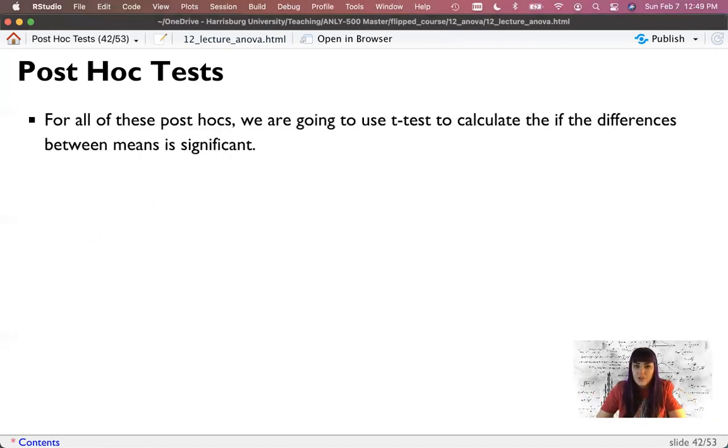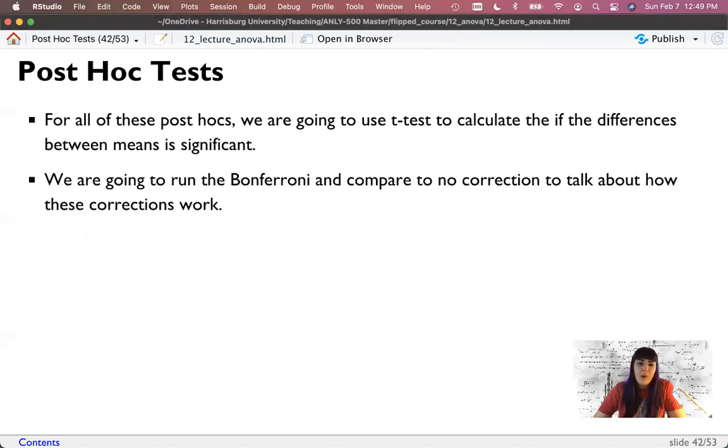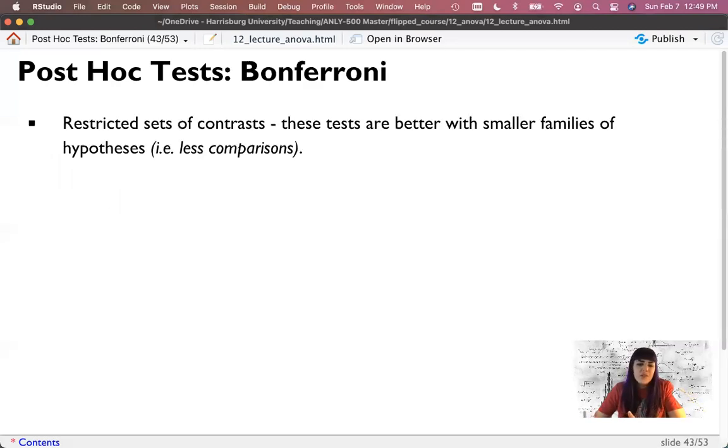And so for all of these post hocs that we're going to do, we're going to use a T-test to calculate if the differences between means is significant. And so I'm going to show you how Bonferroni works and compare it to no correction so you can see what's happening in that correction. And so Bonferroni is a special type of correction where it works better if you have a smaller number of comparisons. And so this works better with the less number of groups. As the number of groups increases, it becomes overly restrictive, meaning it's too controlling.